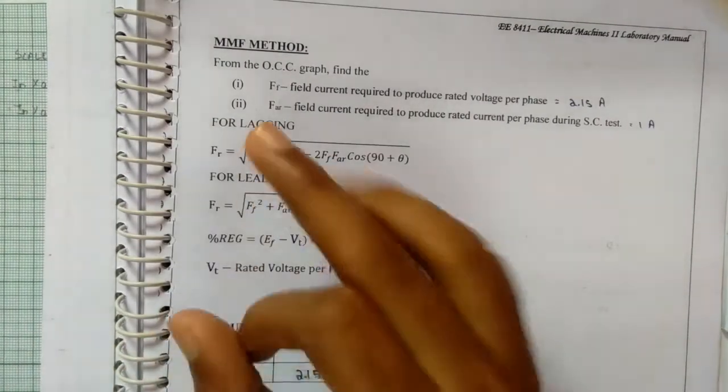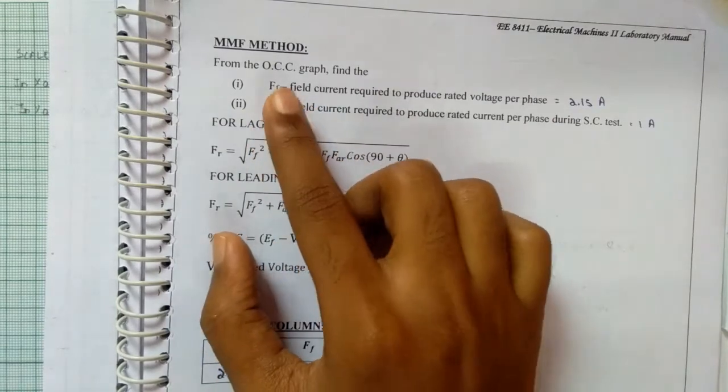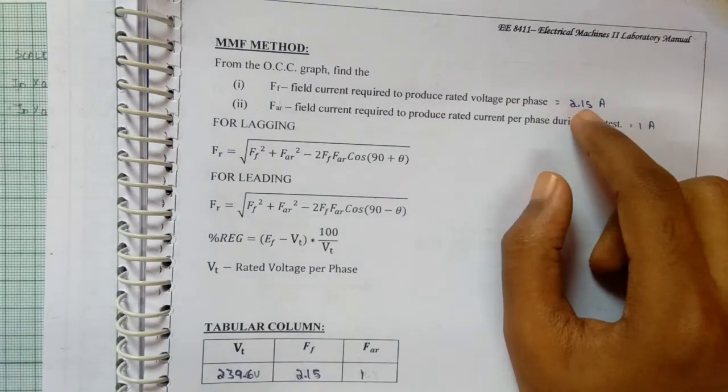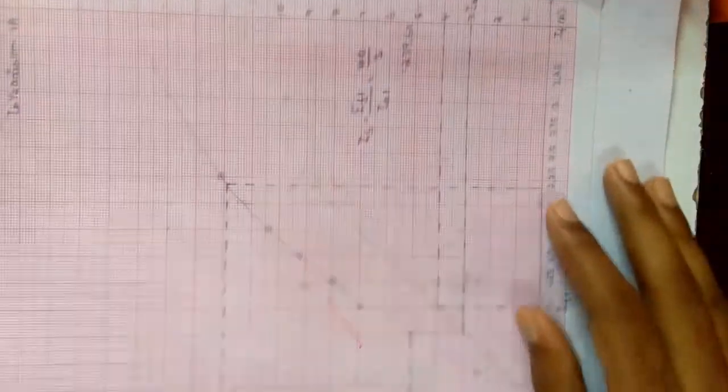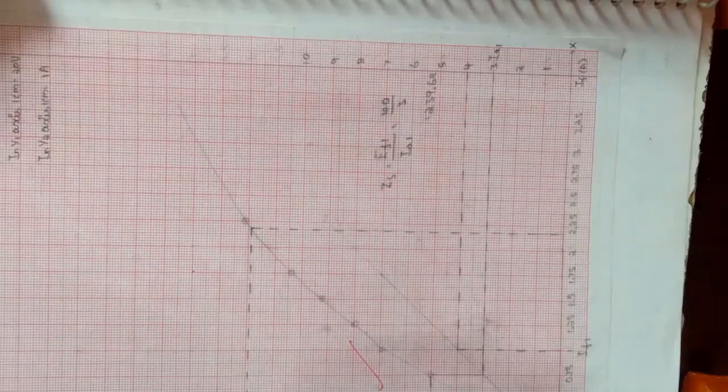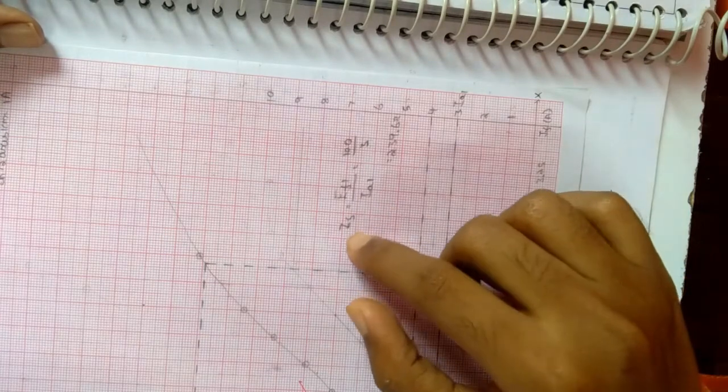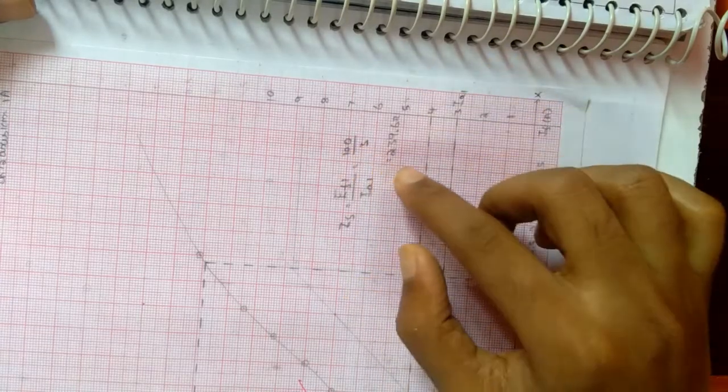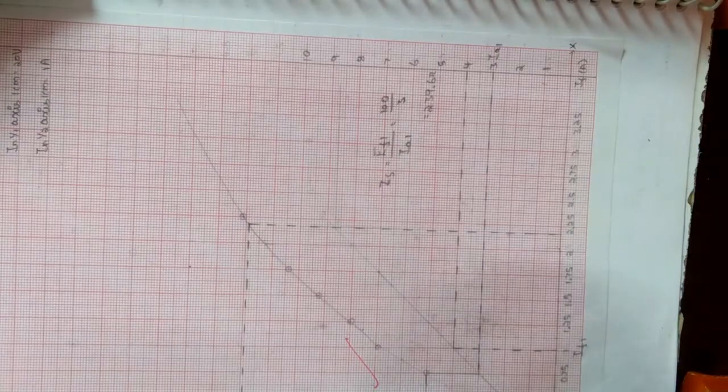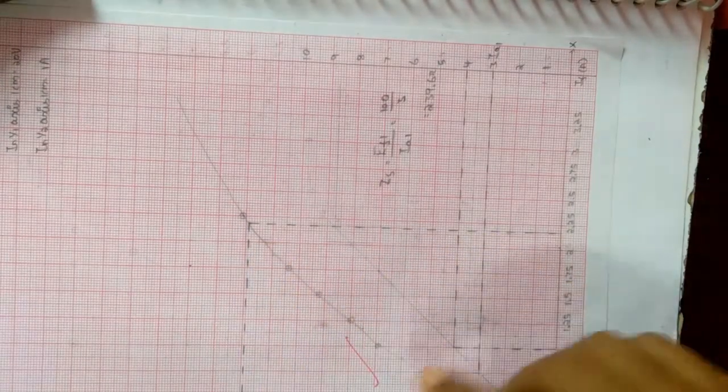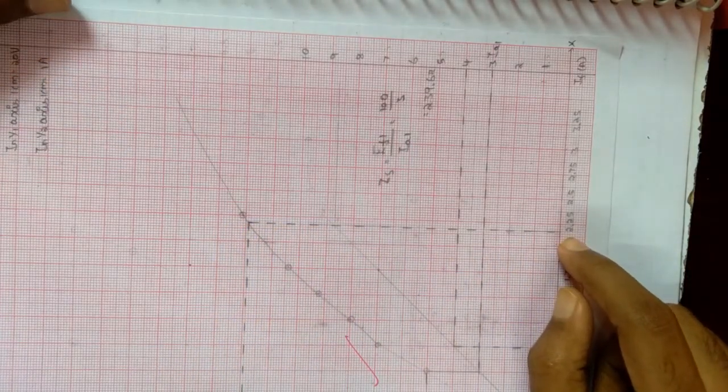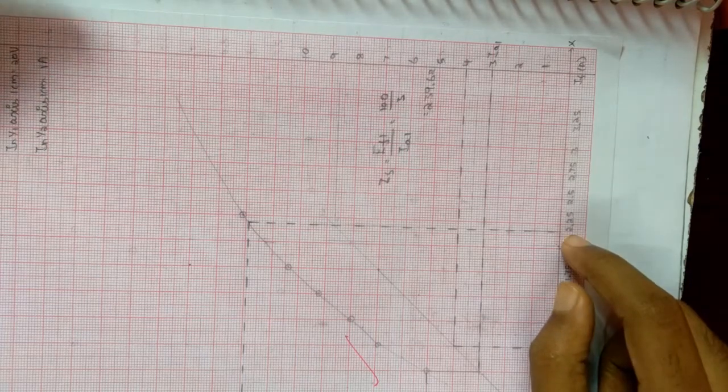For MMF method, we first need two values FF and FAR. FF is the field current required to produce the rated voltage per phase. It is 2.15A. I will show how it came. This is the graph. After dividing the EF1 and IA1, that is 100 by 3, we get a value 239.6. Here we are going to plot 239.6. And where it cuts the curve, we just want to draw a straight line. So this is 2.15. So the value here is 2.15.